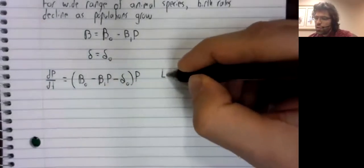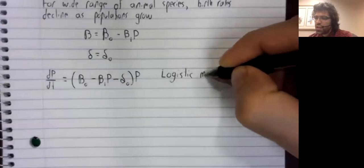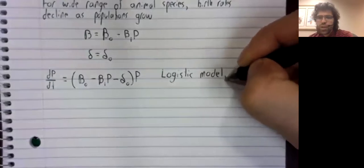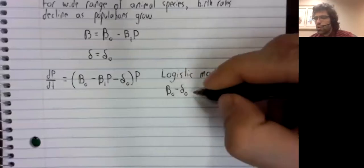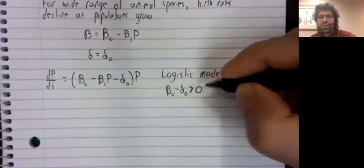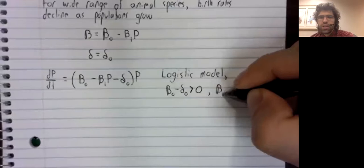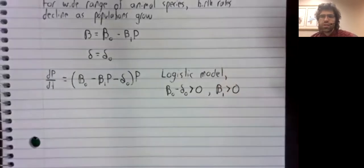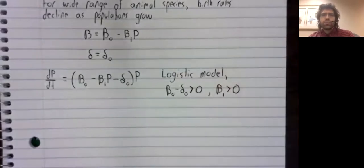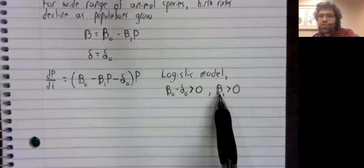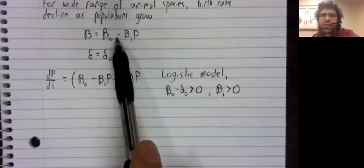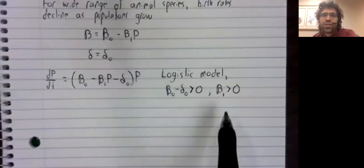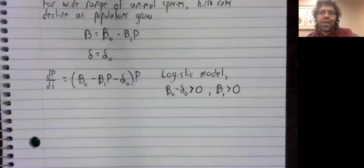This is called the logistic model. So assuming that two conditions are satisfied, we need beta zero minus delta zero to be greater than zero, and we need beta one to be greater than zero. And what do each of these requirements mean? Beta one being greater than zero just ensures that this thing that looks like subtraction really is subtraction. If beta one were negative, the birth rate would be increasing.